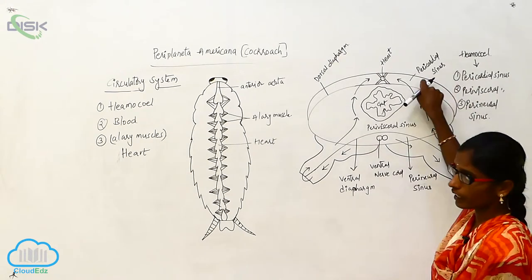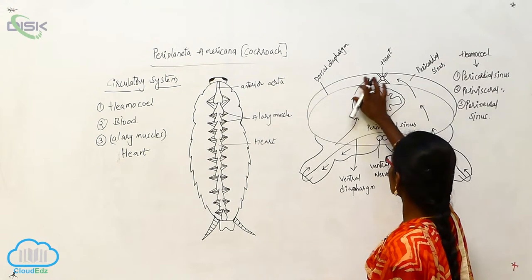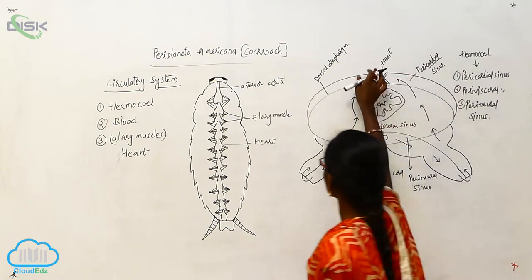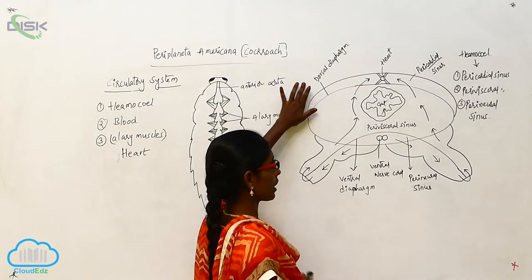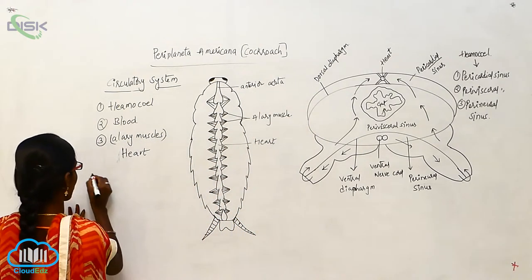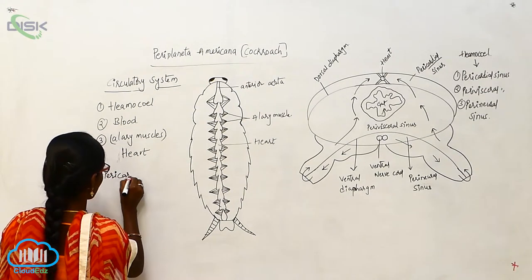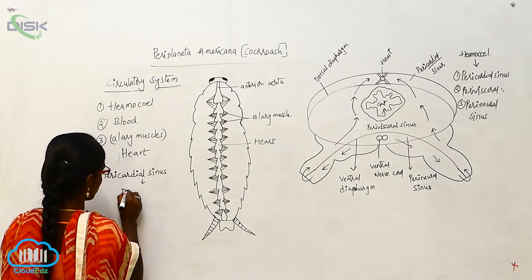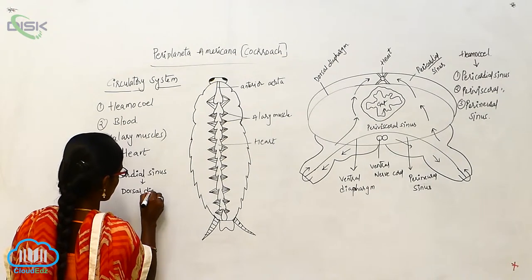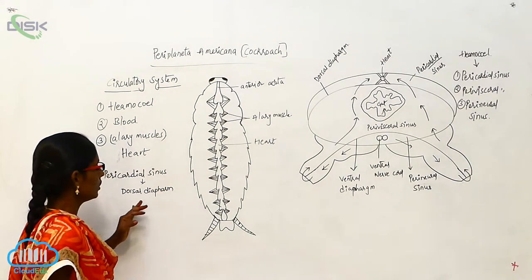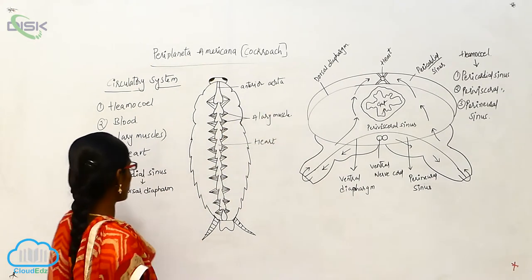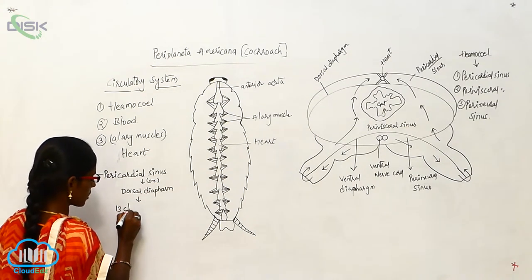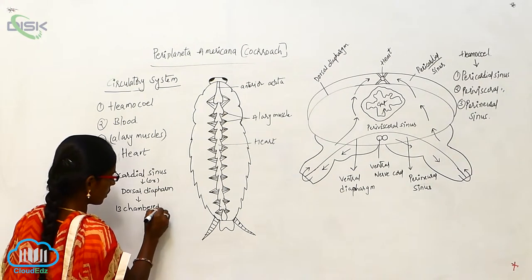The pericardial sinus contains the heart, that is why it is called pericardial sinus. It is also known as the dorsal diaphragm. The dorsal diaphragm or pericardial sinus consists of a 13-chambered heart.